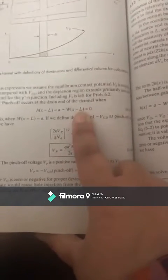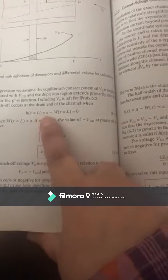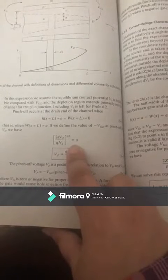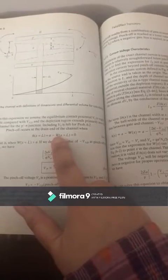When we apply this equation where h equals a minus w equals zero, we can take the pinch-off voltage on one side and other quantities on another. By placing the value of w from the equation, we can achieve this equation for pinch-off voltage.